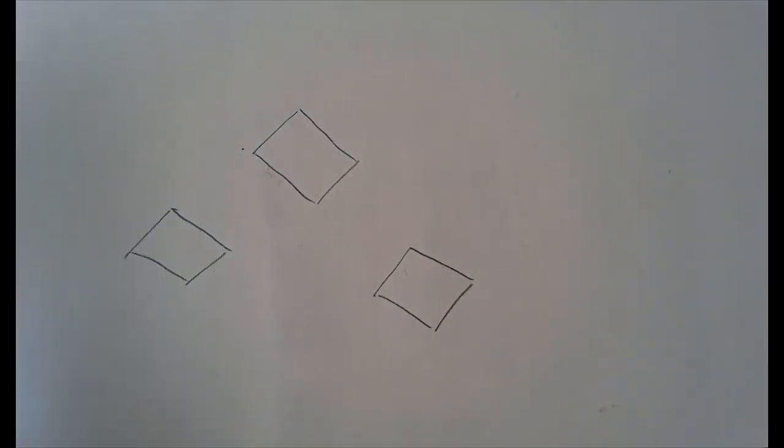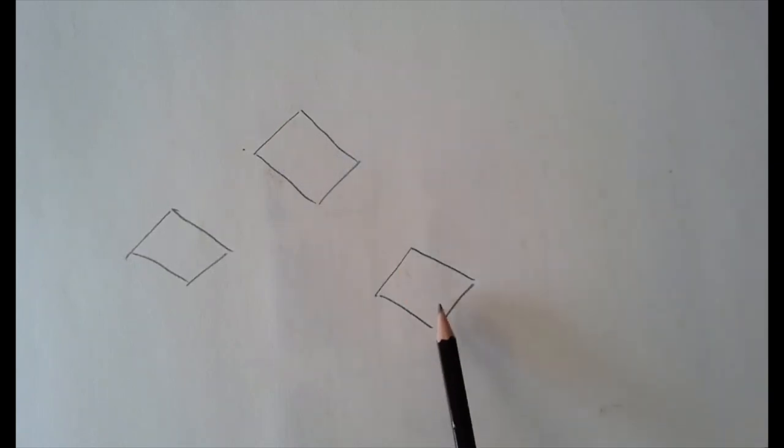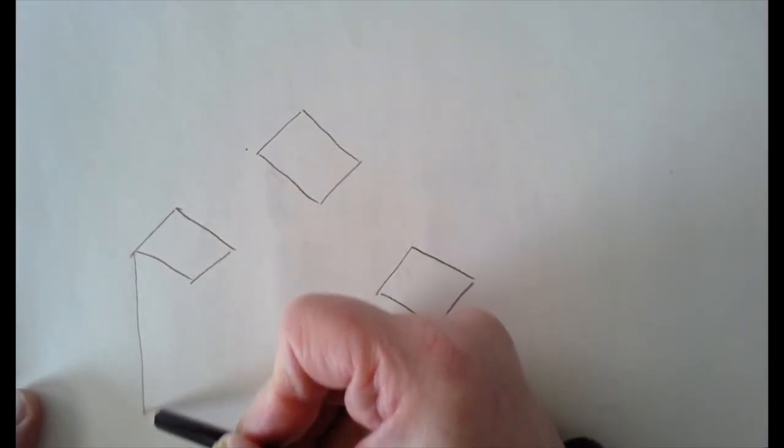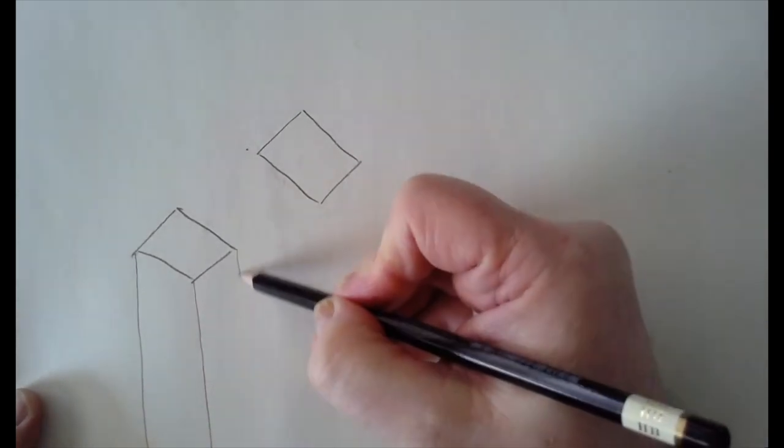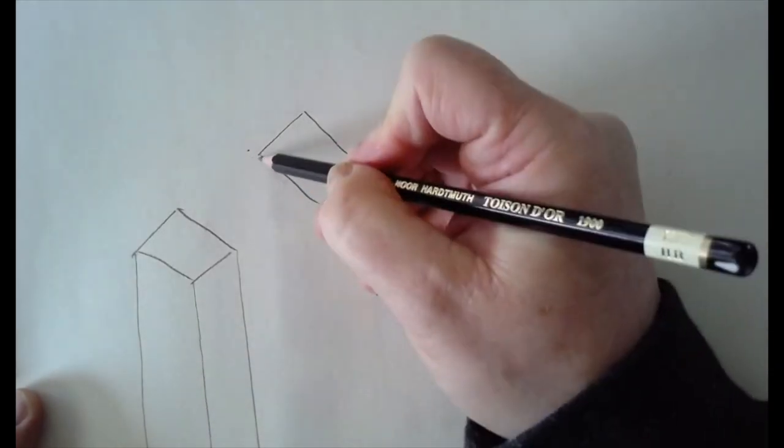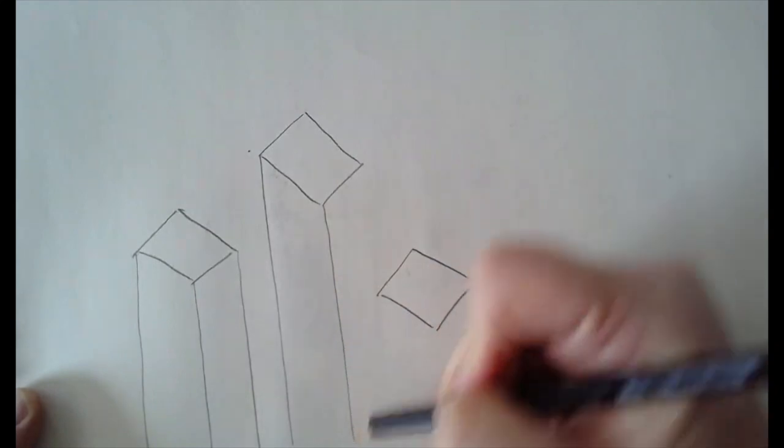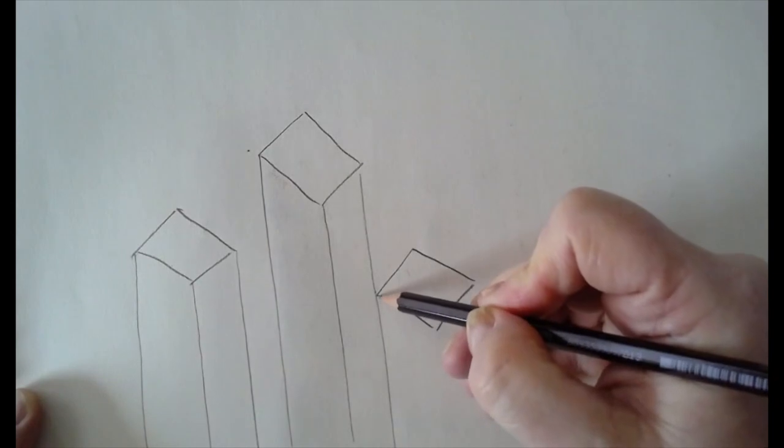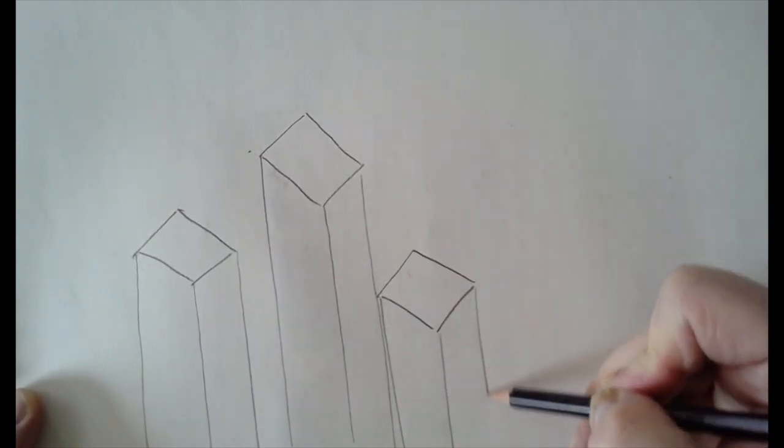On my piece of paper, I've taken my pencil and I've drawn three diamonds. You notice these three and the points are pointed up this way. And what I'm going to do now is I'm going to draw some lines from the bottom three corners. One, two, three. One, two, three. Now, this one kind of overlaps a little bit. I'm still going to draw it in there anyway. One, two, three.